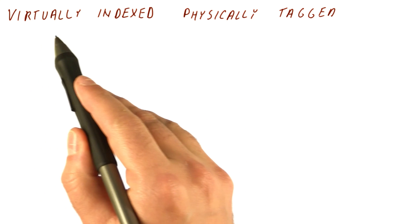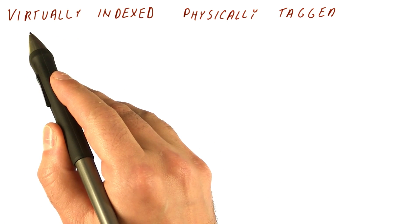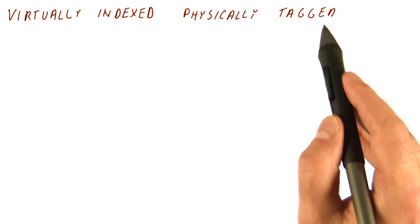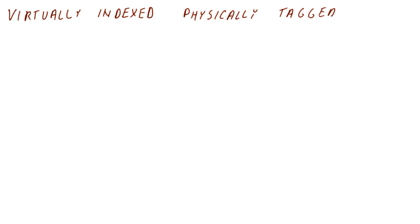So we invented a third type of cache, which is called the virtually indexed and physically tagged cache, which is trying to combine the advantages of the two types of cache. It works like this.